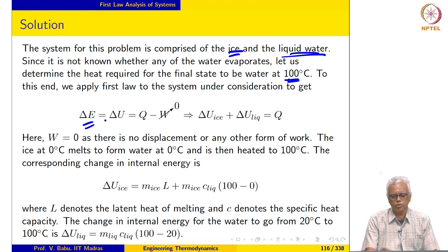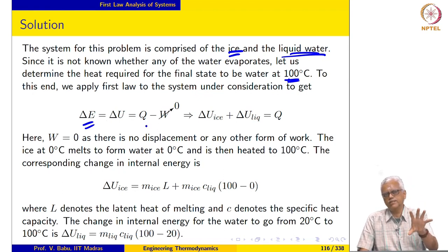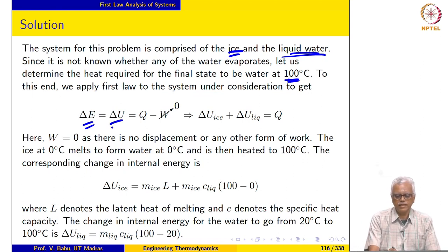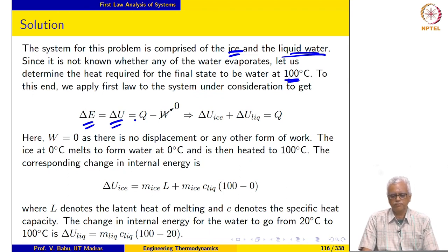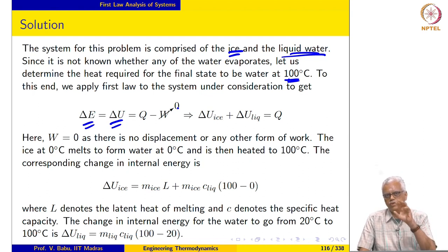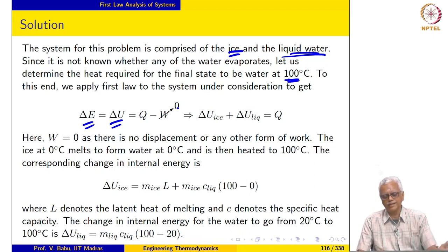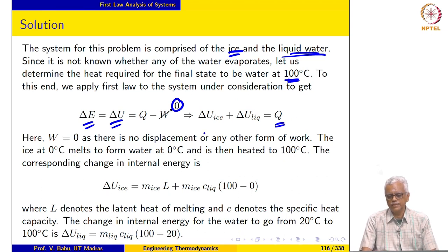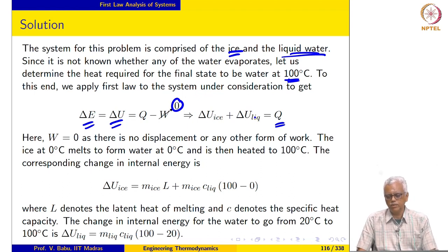We apply first law: delta E equals Q minus W. There are no kinetic or potential energy changes, so delta E equals delta U equals Q minus W. None of the system boundaries deform, so displacement work is zero, and there is no other work interaction. Therefore delta U equals Q. The system is comprised of ice and liquid water, so delta U_ice plus delta U_liquid equals Q.